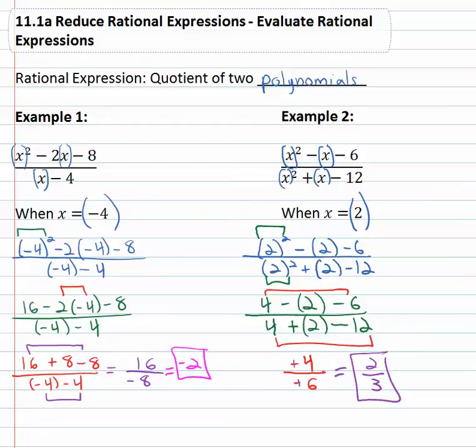So simplifying a rational expression or quotient of two polynomials we simply replace the variable with the number it represents.